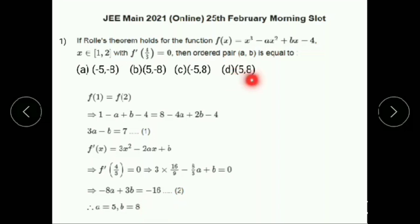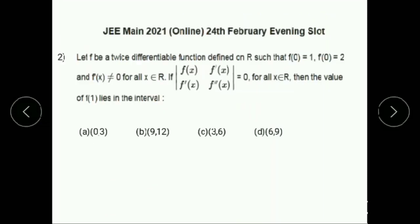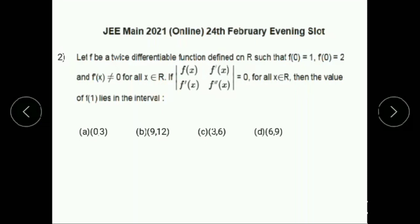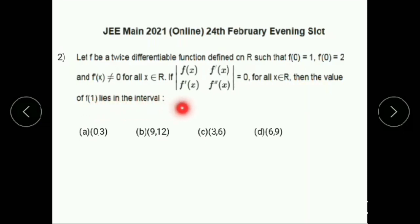The answer is option D. Next problem: if f is a twice-differentiable function defined on ℝ, such that f(0) = 1, f'(0) = 2, and f'(x) ≠ 0 for all x in ℝ, and the determinant of the matrix [f(x), f'(x); f'(x), f''(x)] = 0 for all x in ℝ, then find the value of f(1).